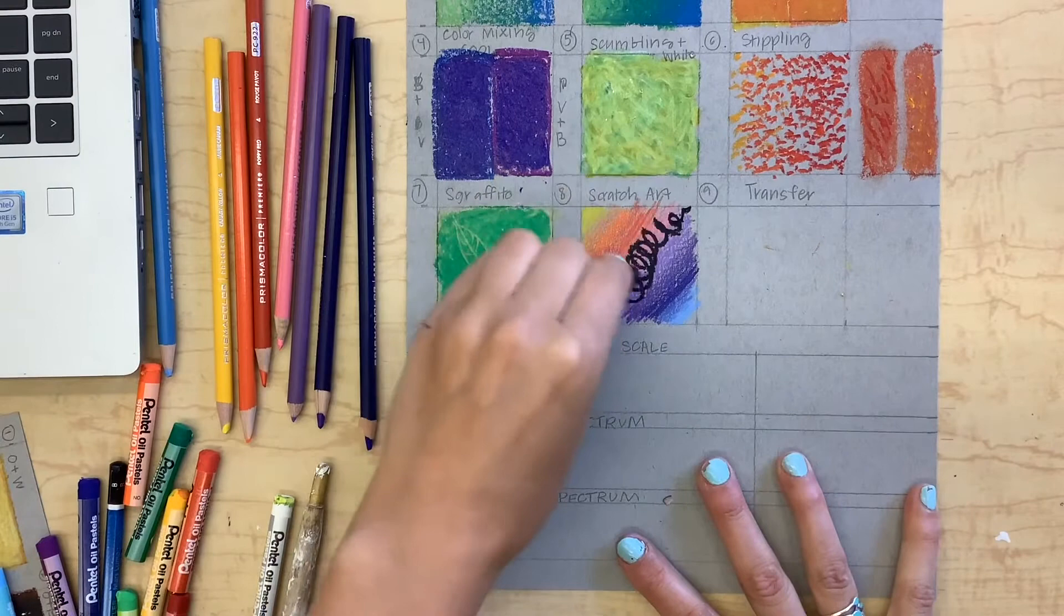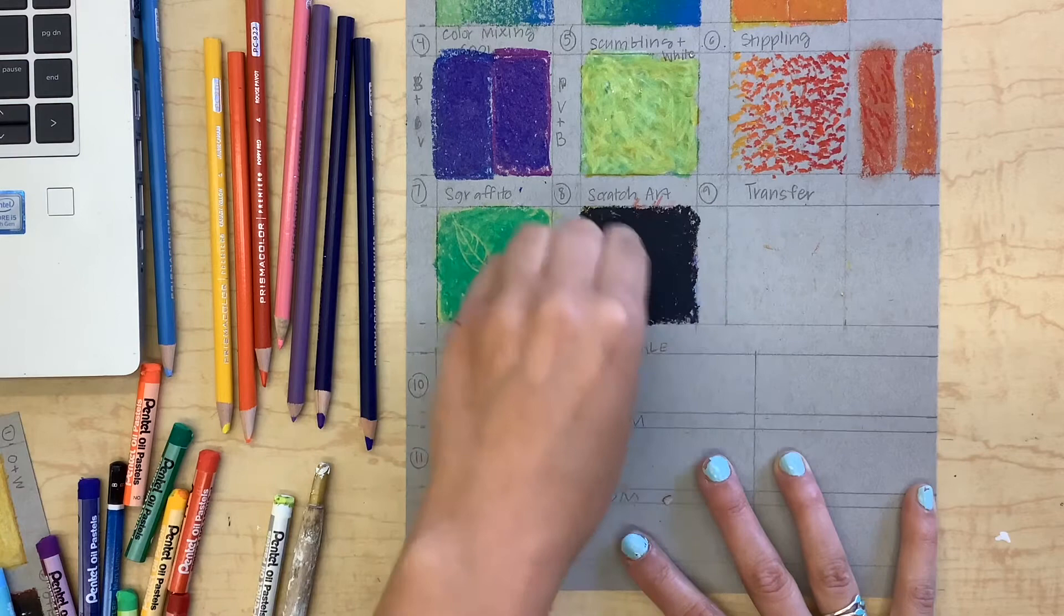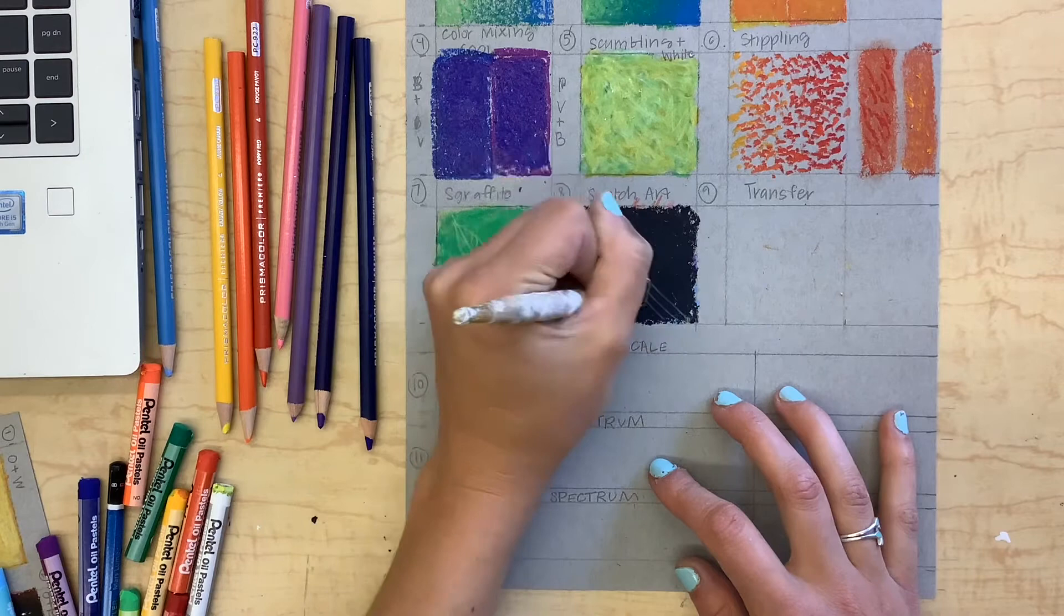Next up is scratch art. I first added a colorful background with colored pencils and now I'm going over it with a black oil pastel, filling it in until I can't see any of the color, and then scratching away to reveal the rainbow underneath.